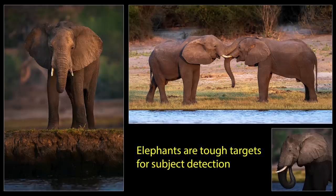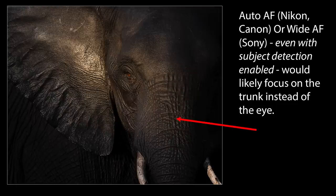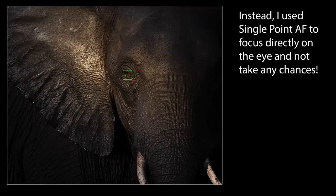Number one: use recognizable subjects. In order for subject detection to be effective, you have to feed it a subject it recognizes. If you don't, the AF area will typically act as it normally does and you may not get the result you expect. For instance, elephants have proved impossible for every subject detection system I've used. So if I point my auto or wide AF area in the direction of an elephant and expect the camera to latch onto the eye, I'm setting myself up for disappointment and likely a shot focused at exactly the wrong spot. In that case, I'm better off using something like single point or spot AF and keeping subject detection on the bench.